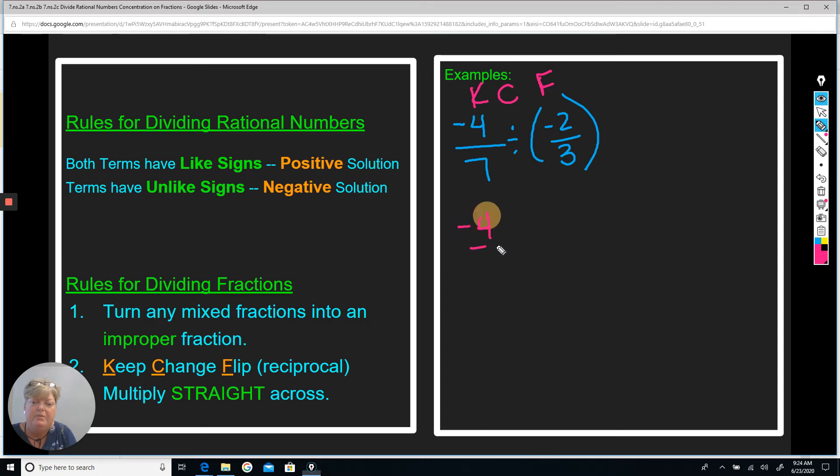Negative 4 over 7, we're going to keep it the first term. We're going to change this divide to multiply. And we're going to flip or find the reciprocal of negative 2 thirds. So I'm just going to flip that over. I'm going to keep my parentheses to keep the multiply sign and the negative sign separate.